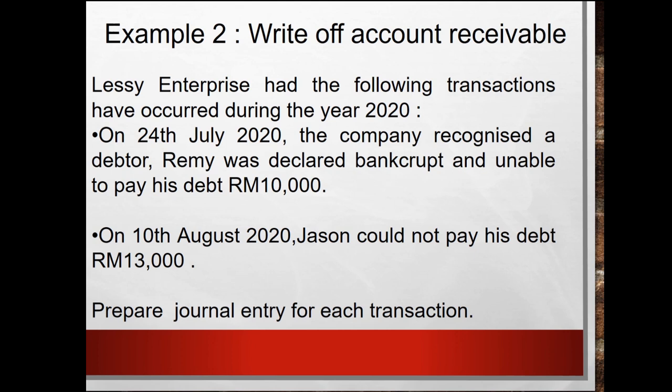And another transaction: on 10 August 2020, Jason could not pay his debt of RM30,000. Prepare the journal entry for each transaction.